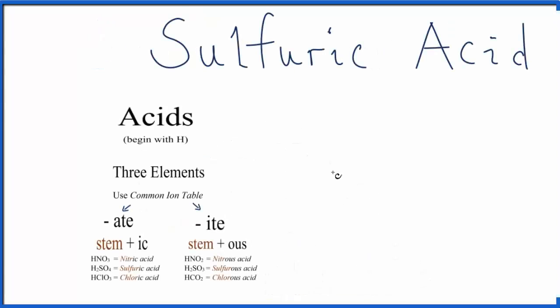Since acids begin with H, let's write H here, and then we need to work backwards. So we know that if it begins with -ic, that polyatomic ion, that common ion we're going to look up in a moment, actually ends in -ate. So I look up here, I have this -ic here, that means I'll look on my common ion table for something like a sulfate.